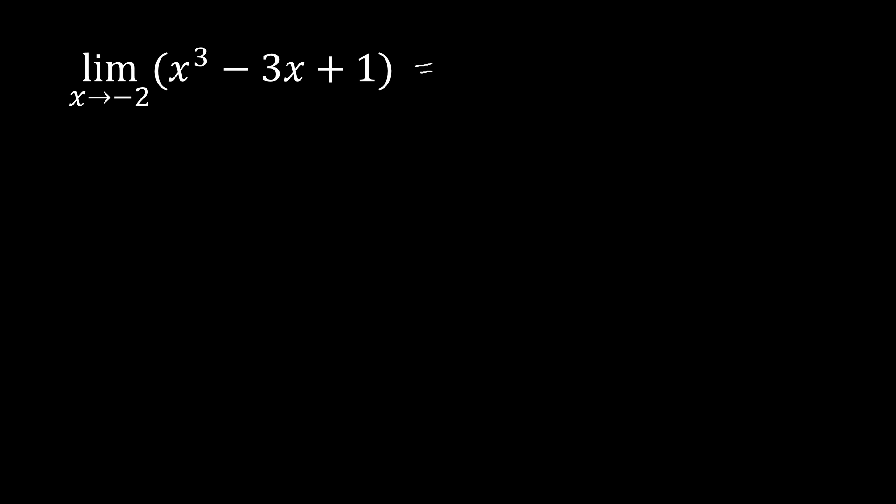So we've got here (-2)³ - 3(-2) + 1. This equals (-2)³, that's -8. -3 times -2, that will be +6. And then we've got +1. This will be equivalent to -8 + 6, that's -2 + 1. That is -1.